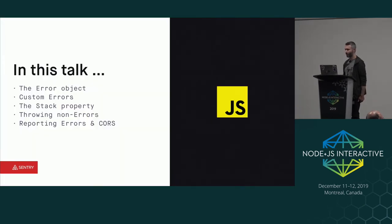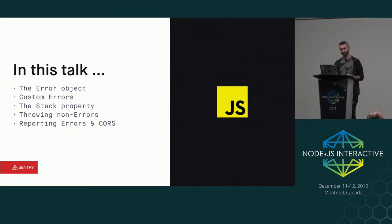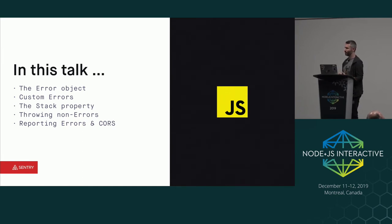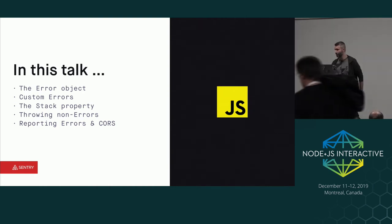So in this talk, I'm going to talk about the error object itself, how you can extend that to create custom errors, the stack property and how stack traces are generated, what it means to throw other objects besides errors, and then a little bit about — now that you know how the error object works and how you try and catch — how can you report on those errors to a logging facility or some other tool.